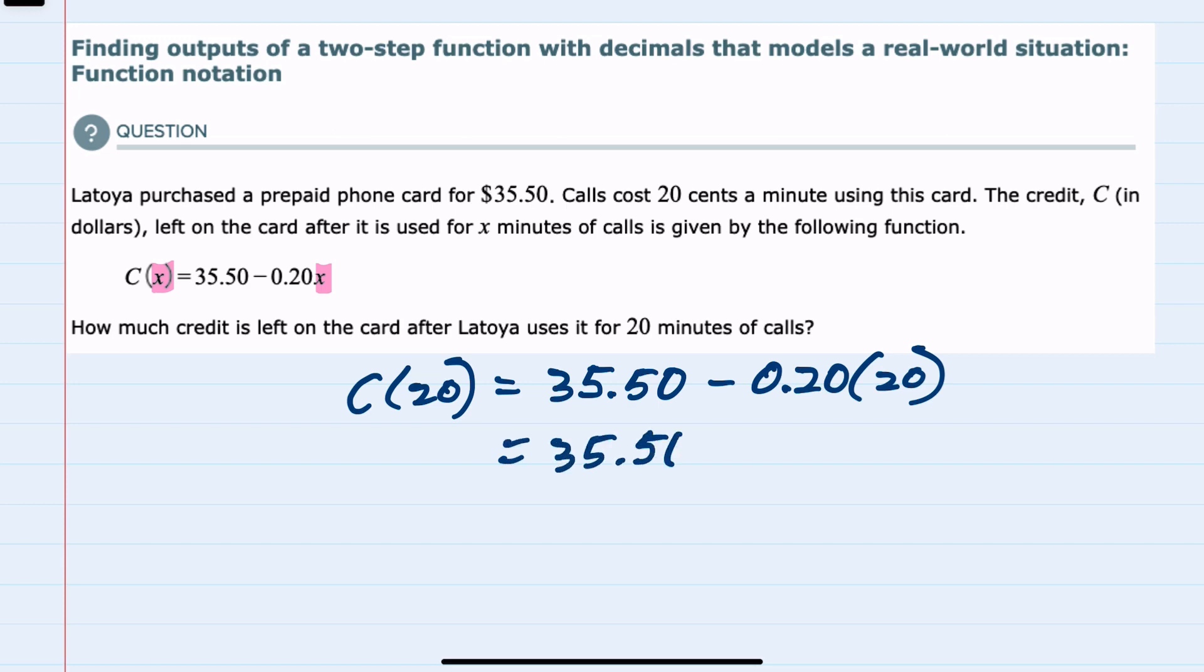Starting with multiplication, 0.20 times 20 equals 4, so minus 4.